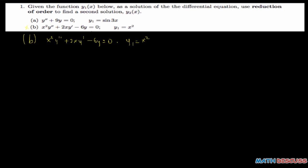So we want to find y2. The same way we solved the first part, we will let y2 equal u of x times y1. And since y1 is x squared, y2 equals u times x squared. Since we are assuming that y2 satisfies this differential equation, we are going to find y2 prime and y2 double prime, then make a substitution and confirm it equals 0.